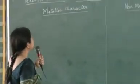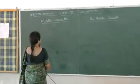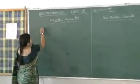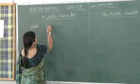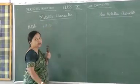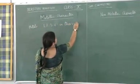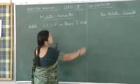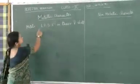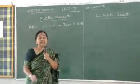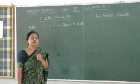Today we'll start with the properties of metallic character and non-metallic character. The metallic character refers to the tendency of metals to lose electrons. Metals have one, two, or three electrons in their valence shell, and in order to get the noble gas configuration, they naturally lose these electrons and attain a positive charge. So they are called electropositive elements.